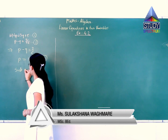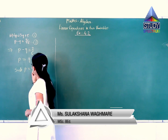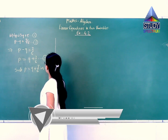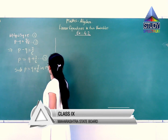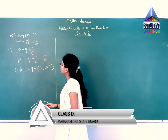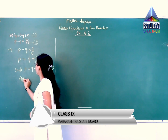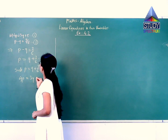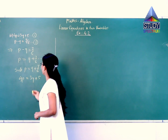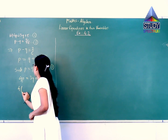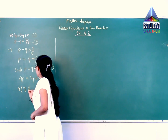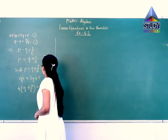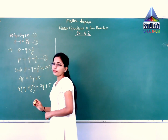Substituting P equals Q plus 7 by 6 in equation 1. Let us rewrite equation number 1: 4P is equal to 3Q plus 5. So, 4 instead of P — Q plus 7 by 6 — is equal to 3Q plus 5.